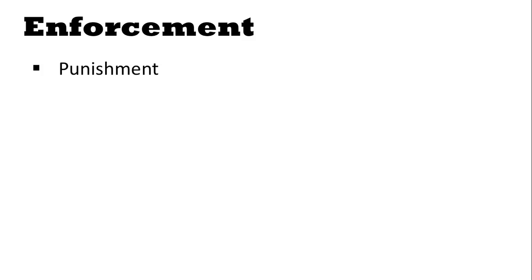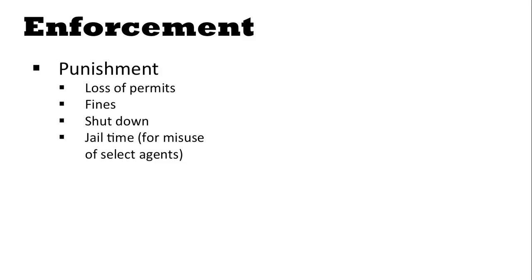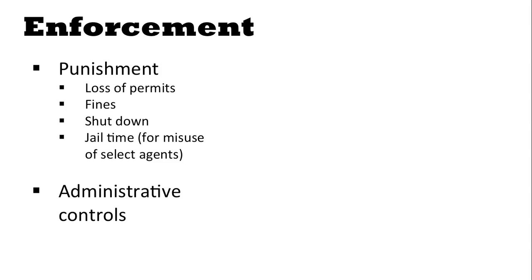Let's take a moment to discuss how safe and responsible work is enforced. In extreme cases, there are punishments, and these can include loss of permits, fines, shutting down the lab, or even jail time for misuse of select agents, which are typically associated with bioterrorism or biowarfare. More commonly, there are administrative controls. For example, if you attempted to order a dangerous bacterium, the supplier would ask for paperwork demonstrating that you were capable of working safely with that bacterium. If you couldn't provide the paperwork, the supplier will reject the request.